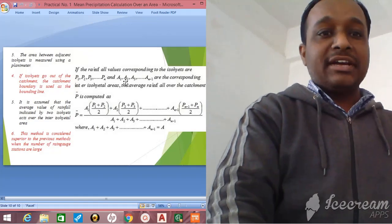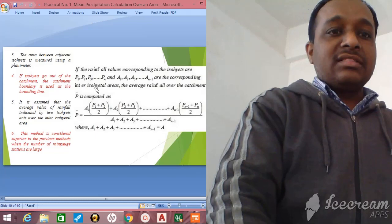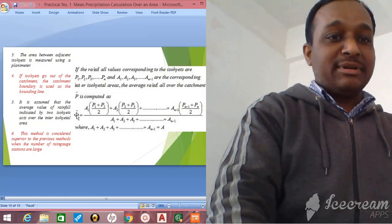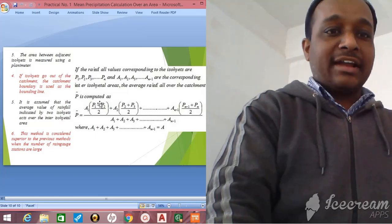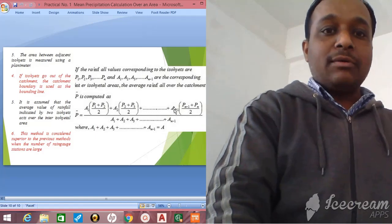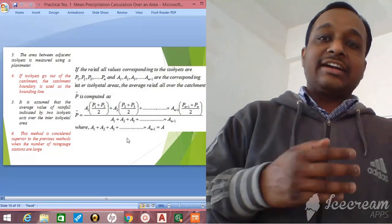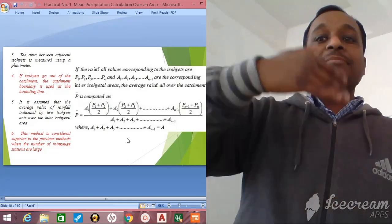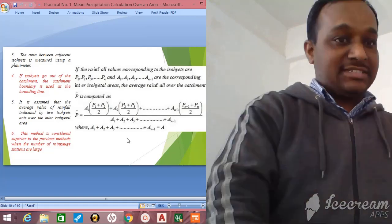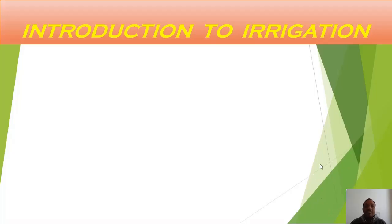In the Isohyetal method, if rainfall values corresponding to the isohyets are P1, P2, ... Pm with areas A1, A2, ... An, then P-bar equals A1·(P1+P2)/2 + A2·(P2+P3)/2 + ... + A(n-1)·(P(n-1)+Pn)/2. Here we are selecting two adjacent rain gauge stations and the catchment area between corresponding isohyets to compute the weighted average.